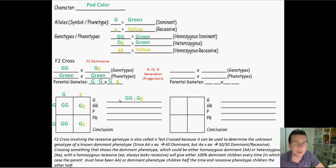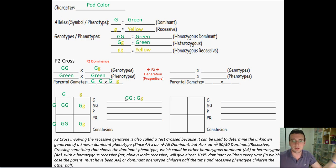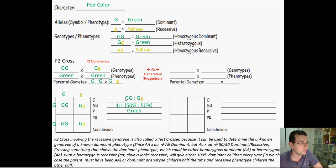So what genotypes show up? Big G, big G and big G, little G. Notice that the homozygous dominant and the heterozygous showed up, but the homozygous recessive did not show up. The ratio is two homozygous dominant and two heterozygous, so a one-to-one ratio — a 50-50 chance of getting either for any particular child. For the phenotype, everybody looks green, so it's 100% green.